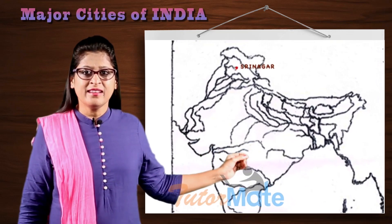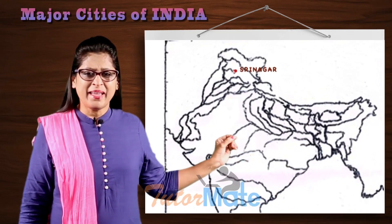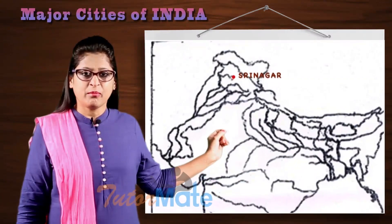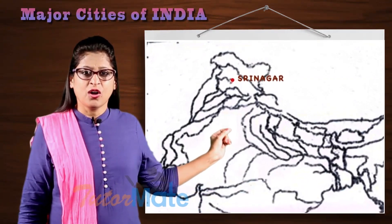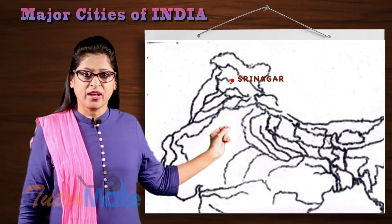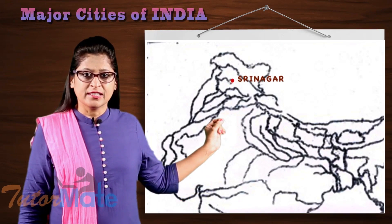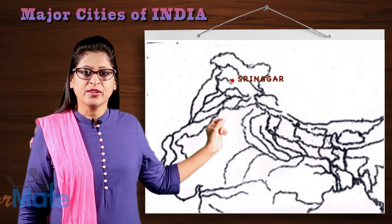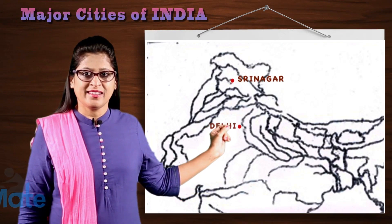Then exactly parallel to the Nepal border, on the bank of the river Yamuna, a dot — that is your New Delhi.